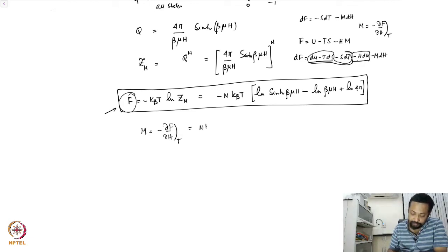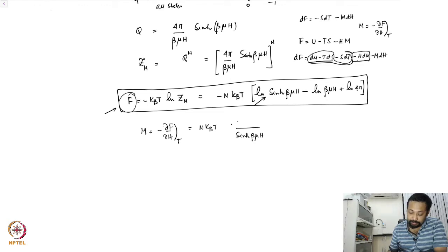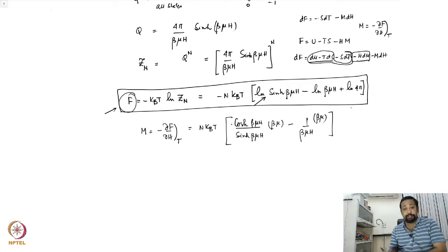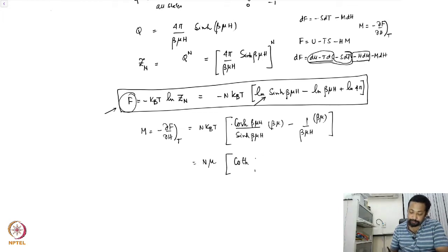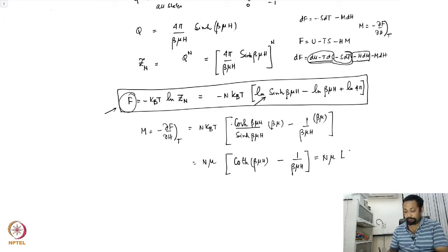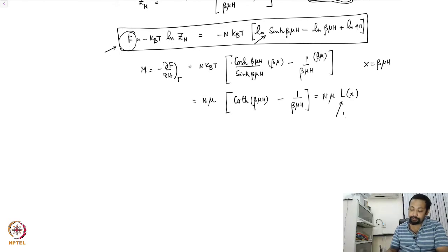So let's compute this. Taking the derivative del/del H of the free energy, the first term gives sinh(beta mu H) times cosh(beta mu H) times beta mu, minus 1 over (beta mu H) times beta mu. Once beta mu comes outside, you can immediately see that this is going to be N mu times [coth(beta mu H) minus 1/(beta mu H)], which we write as N mu times L(x), where x equals beta mu H, and this function is called the Langevin function.